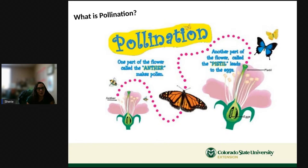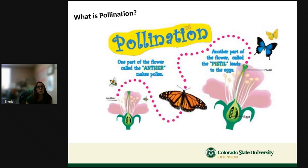Let's do a quick overview of pollination. Pollination is the process by which plants reproduce. Flowers have a part called an anther — that's the part that makes pollen, which is what the flower needs to reproduce. A pollinator — a bee, butterfly, bird, or even a bat — touches the anther while getting a drink of nectar.